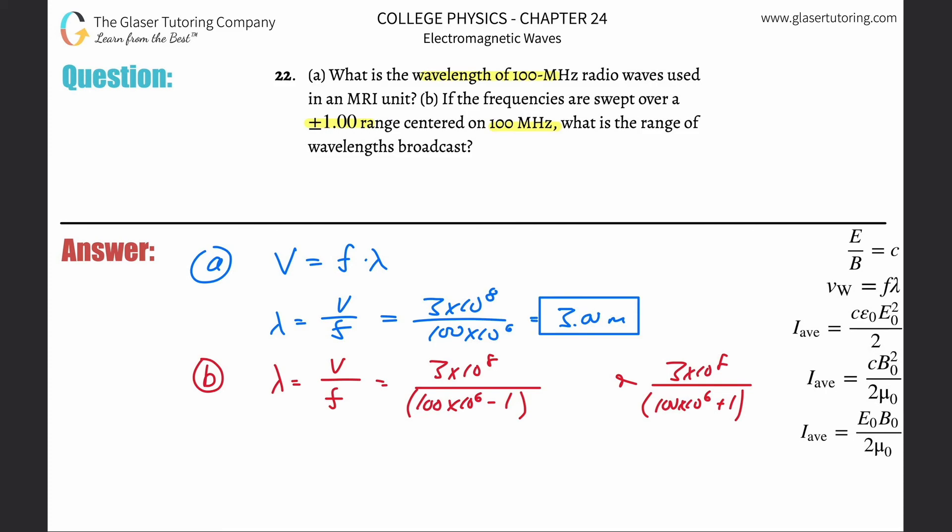So three times 10 to the eight divided by 100 times 10 to the six minus one. It's three, right? It's three. And then what do you think the other one's going to be? It's going to be 2.99. It's basically three.